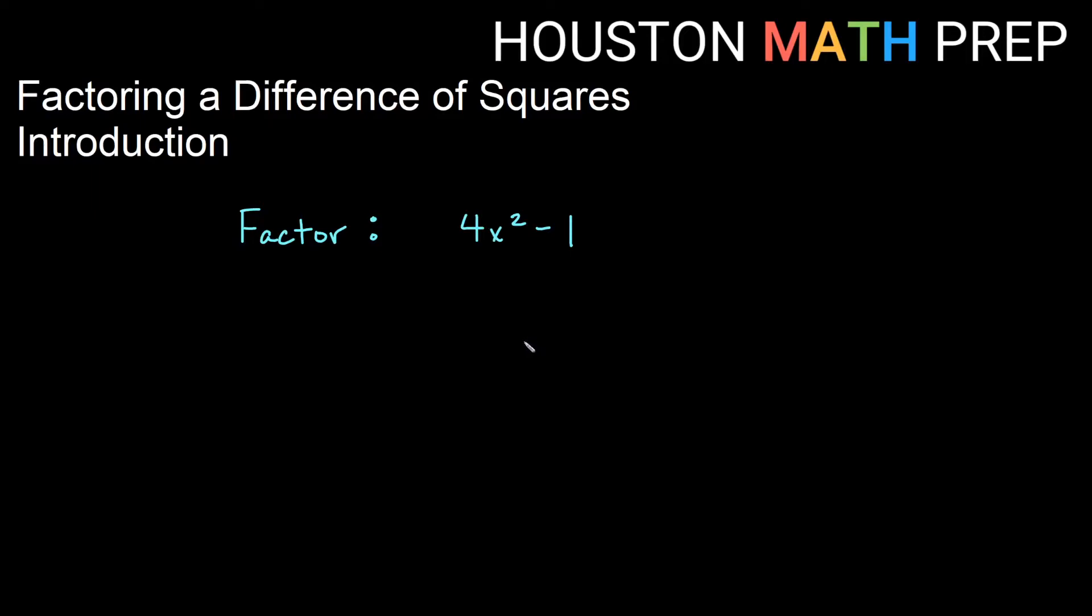So we have 9x² minus 1. So I want to see this is a perfect square, something times itself, and this is a perfect square, something times itself, with minus in between. So this is a difference of squares. This is, 9x² is actually 3x times 3x. In other words, 3x all squared. And 1 is obviously 1 times itself. So I have 3x squared, and I have 1 squared. So my factors are conjugates involving 3x and 1. In other words, I end up with 3x plus 1, and 3x minus 1 as the factored form of this 9x² minus 1.